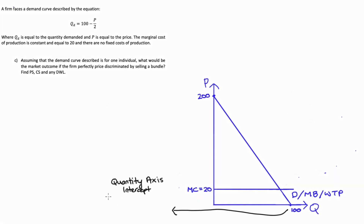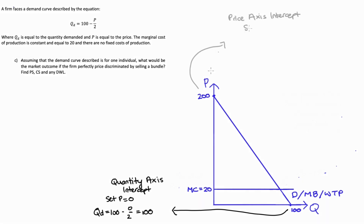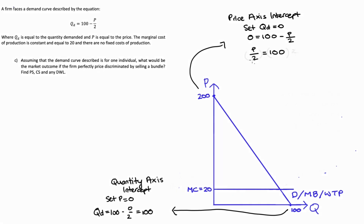To find our quantity axis intercept, I set P = 0 in the demand equation, giving QD = 100 minus 0 over 2, which equals 100. To find the price axis intercept, I set QD = 0, giving 0 = 100 minus P over 2. Solving for P: add P/2 to both sides to get P/2 = 100, then multiply both sides by 2, giving P = 200. That's our price axis intercept.